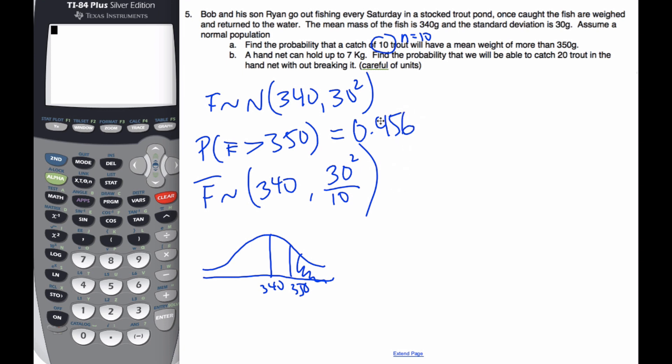Okay, so this is using the idea of sample means. Part B talks about if a net can handle 7 kilograms, find the probability we'll be able to catch 20 trout, so n equals 20, in the net without breaking it. Be careful of the units.